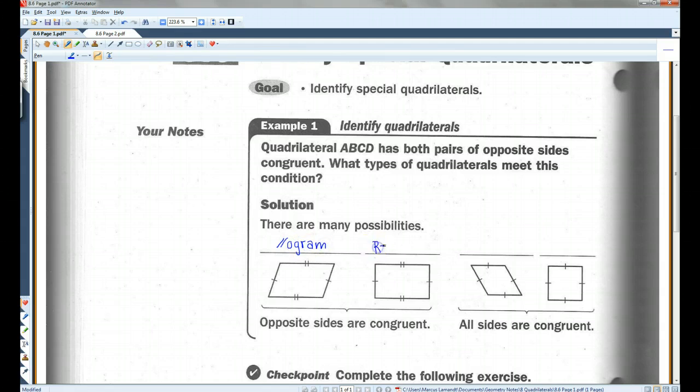This one is a rectangle. If all the sides are congruent, this one is a rhombus. And this one is a square. Okay, so all four of these have opposite sides congruent.